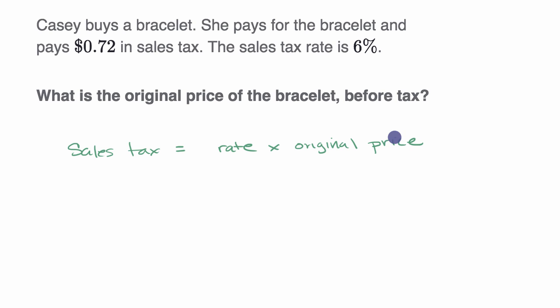What do we know here? They tell us the sales tax is 72 cents. So 72 cents equals our sales tax rate. They also tell us that's 6%, so it equals 6% times the original price. And that's what they're asking for, the original price. Let's call it P for short.